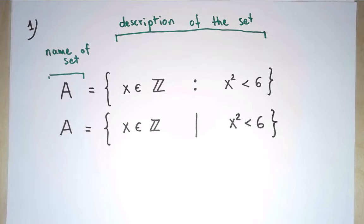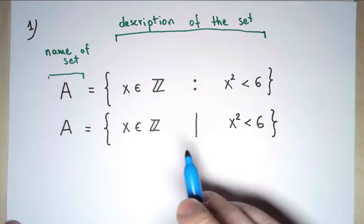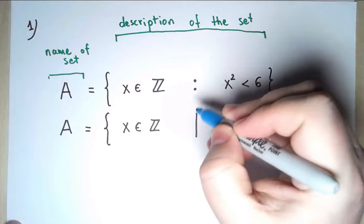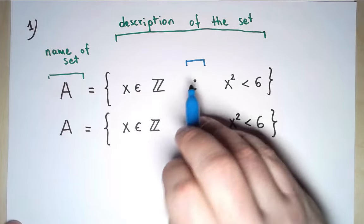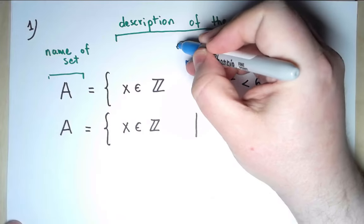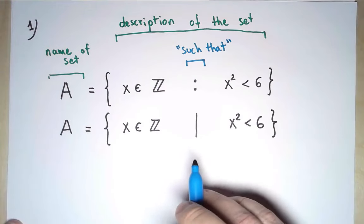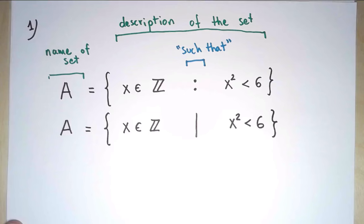Now, in the middle of this description, there is this symbol that may be new, either a colon or a vertical bar. We read this symbol 'such that.' I use this symbol only in this context, exclusively in set-building notation. Don't use it anywhere else.